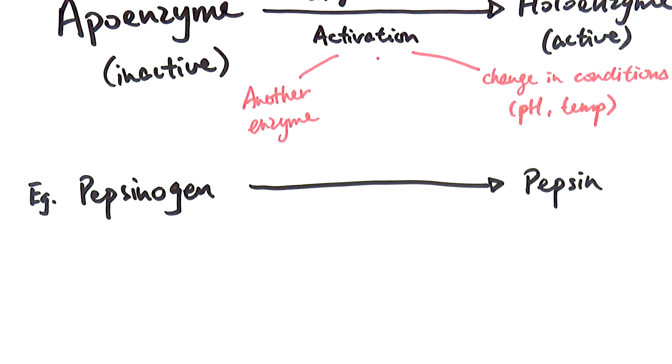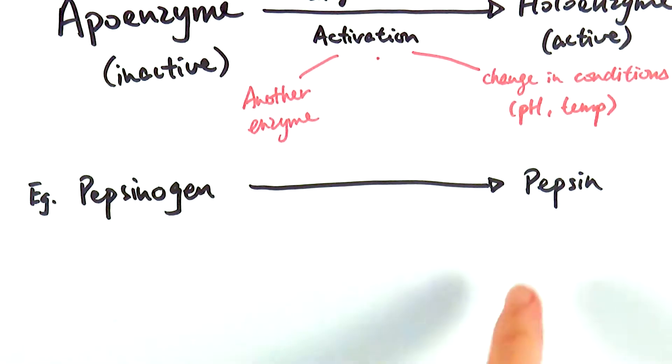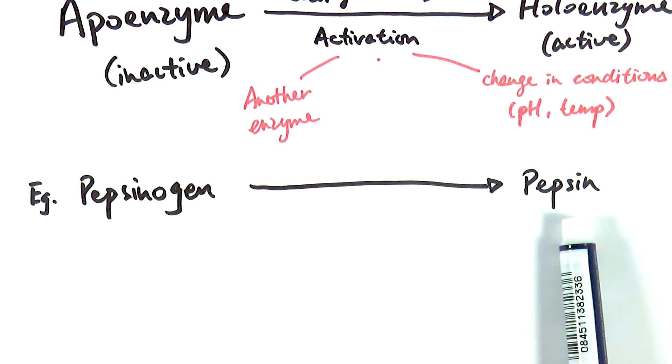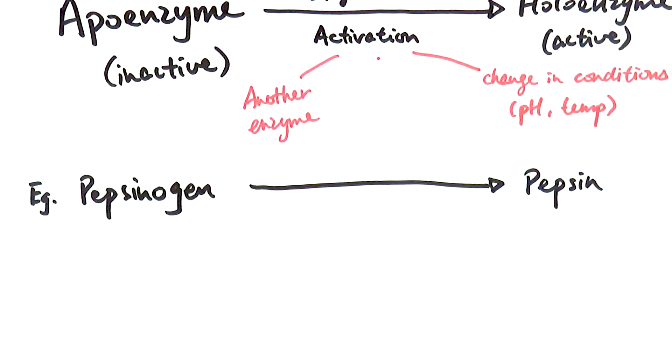Pepsinogen, imagine this case, right? The cells in the stomach will go through protein synthesis to produce pepsinogen. But imagine if we don't have pepsinogen in the first place—they directly produce pepsin. Your cell itself is also made of lots of proteins. There are enzymes in there, also the cytoskeleton and lots of actual structures, organelles in the cell that are made of proteins. So if pepsin is made in this active form in the cell, the moment it was made by the ribosome, it will start digesting all the proteins inside your cells. Obviously that will be bad because it's basically digesting your own stomach.